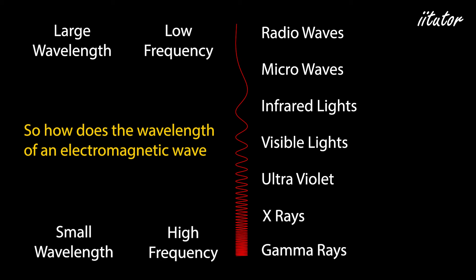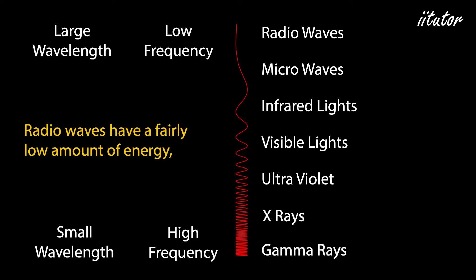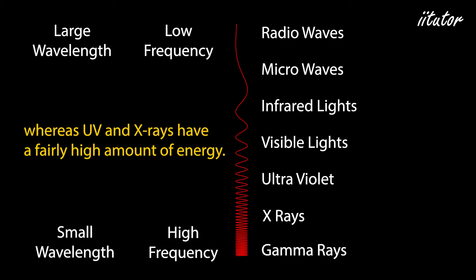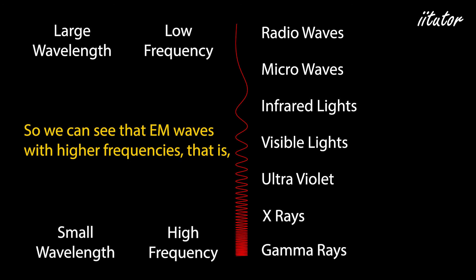So how does the wavelength of an electromagnetic wave relate to the amount of energy it carries? Radio waves have a fairly low amount of energy, whereas ultraviolet and x-rays have a fairly high amount of energy. EM waves with higher frequencies have more energy than those with lower frequencies.